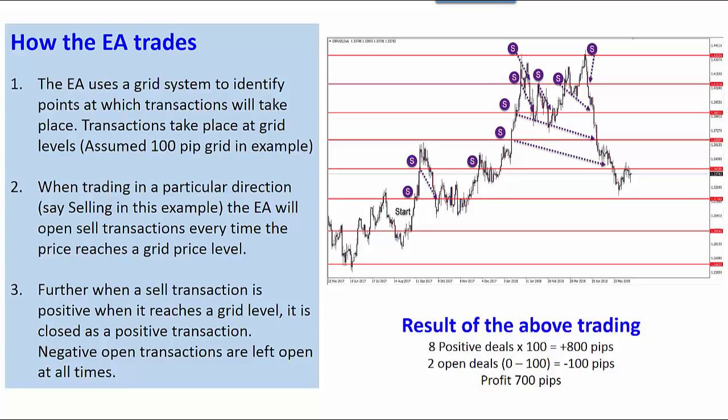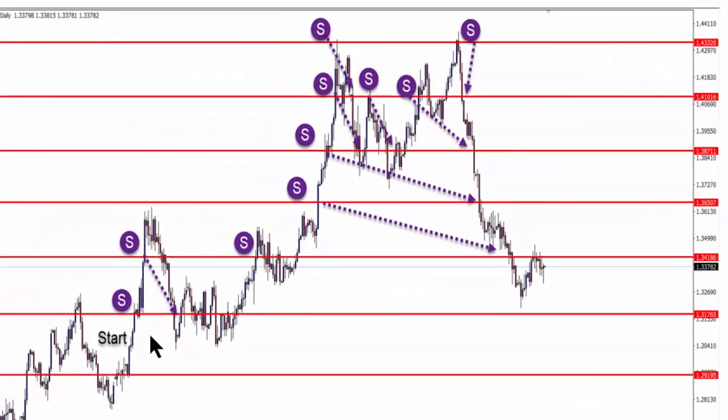When starting to trade, the trader can decide whether to trade in a buy direction or a sell direction, or even trade both ways. Every time the price touches a grid level and there is no other open transaction at that level, it will open a sell transaction. If at the same time an open transaction is positive at that level, it will close that transaction at a positive balance.